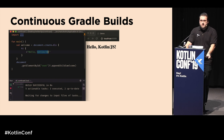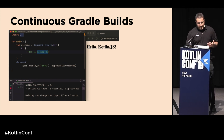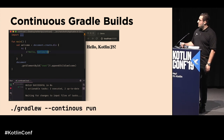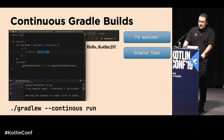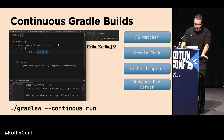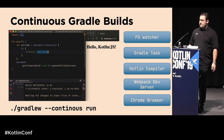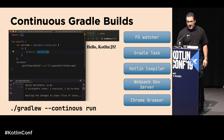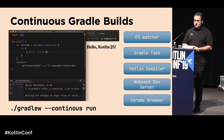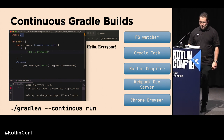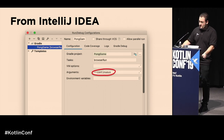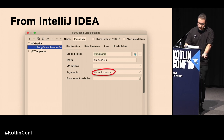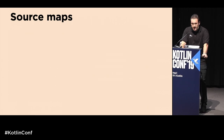The webpack dev server is a neat tool to spin up a local server and quickly get your application running for local testing. The real power is unlocked by running with the continuous flag in Gradle, which turns on a file system watcher. Every time a file changes, it runs the specific Gradle task, invokes the Kotlin compiler, which runs the webpack dev server, and that triggers your Chrome browser to reload — all rather quickly. You can also do this via a run configuration inside IntelliJ.